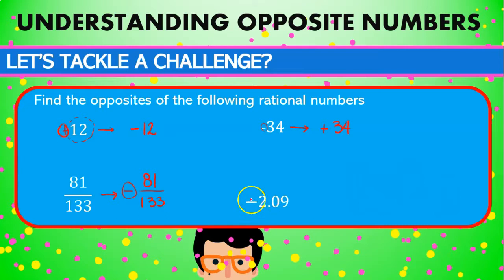So the opposite of 81 on top of 133 is the same number with the negative sign. And the same logic applies to negative 2.09. So it's going to be positive 2.09.